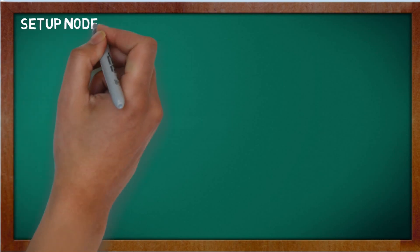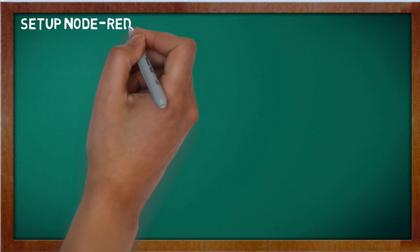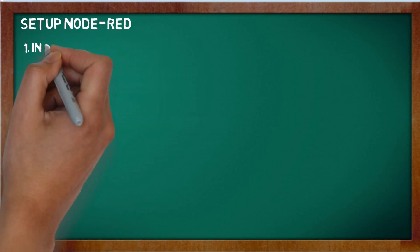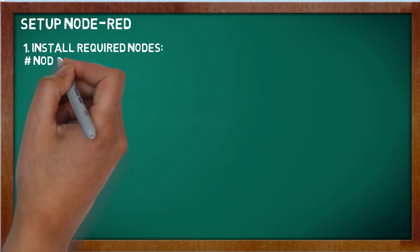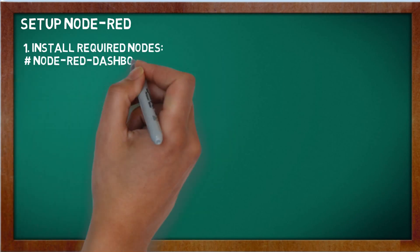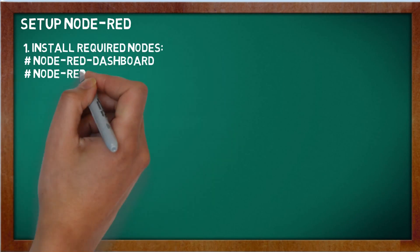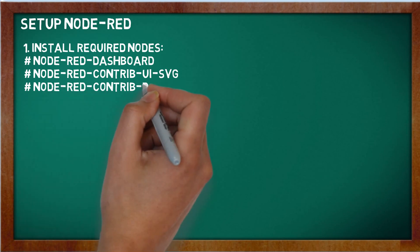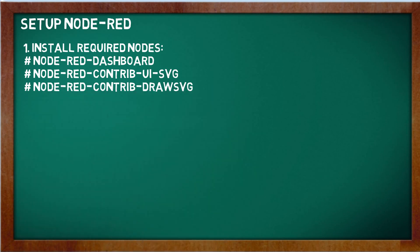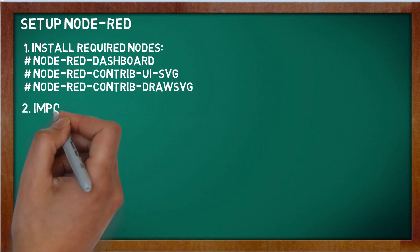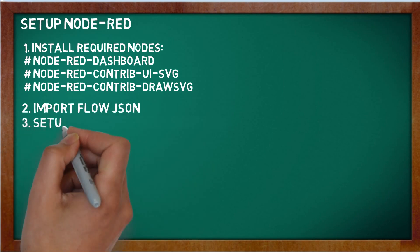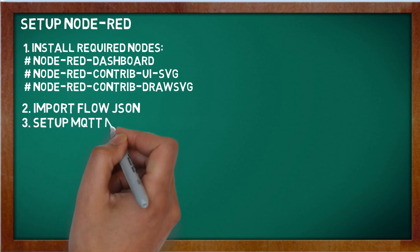In step 2, set up Node-RED. After installing Node-RED, please install the required nodes. Then import the JSON file, and then set up the MQTT node configuration.